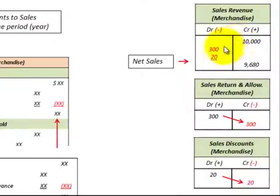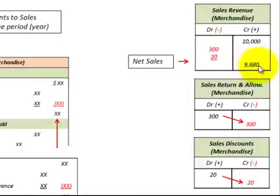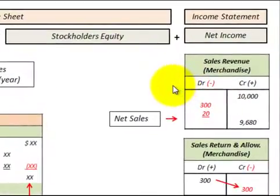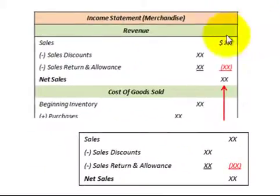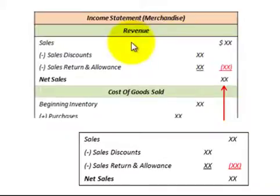We take the sum of the sales minus the contra accounts and come up with a net amount of $9,680, which is our net sales for the year. The sales revenue then gets closed through an income summary account, which goes into retained earnings and becomes part of stockholders' equity on the balance sheet. Let's look at the income statement, which summarizes what we've done in closing our contra accounts to the sales revenue.